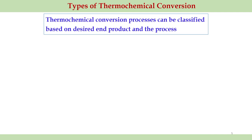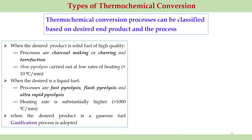The thermochemical conversion process can be classified based on desired end product and the processes. If we are interested to make torrified biomass or torrified coal, our attempt is to do the process very slowly — meaning the heating rate should be less than 10 degrees Celsius per minute. Torrification is used when we require high quality solid fuels.